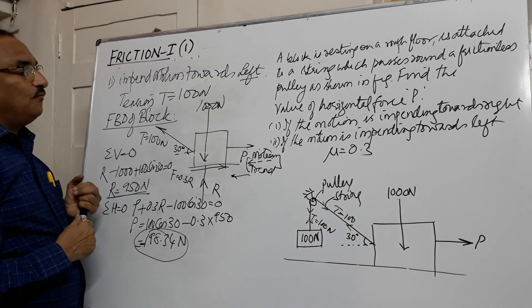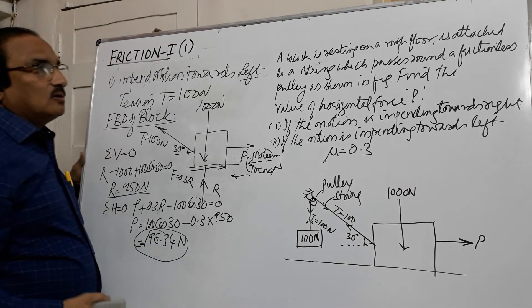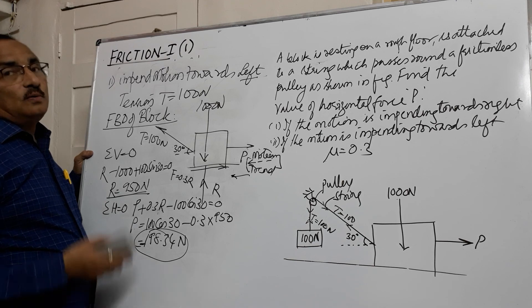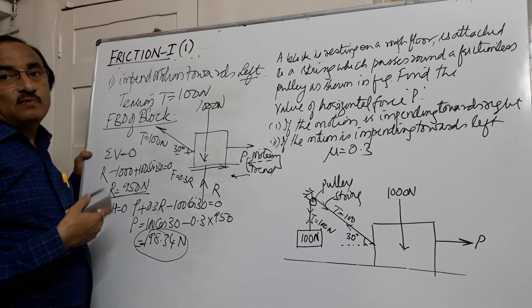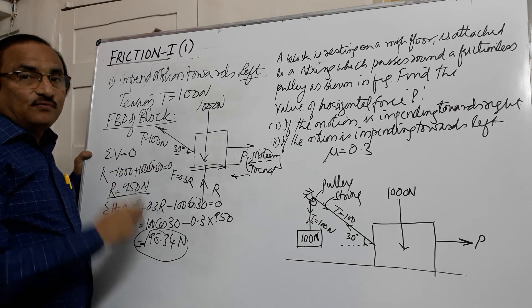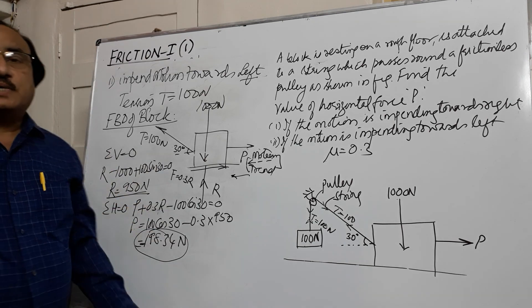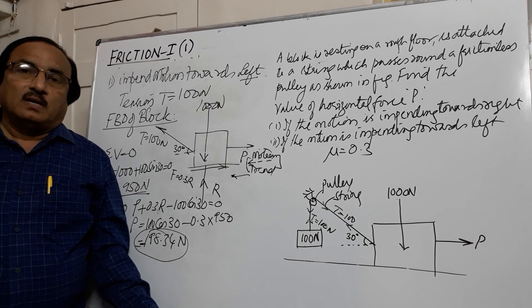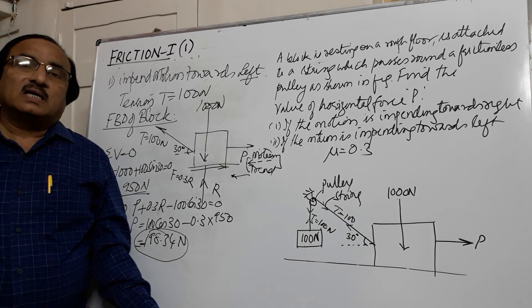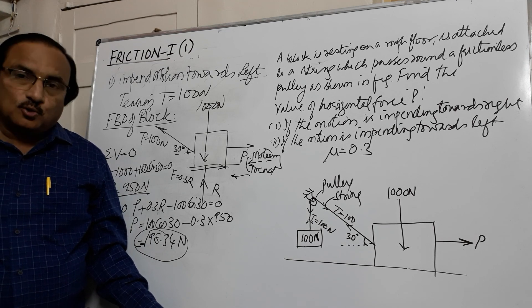These are the types of problems in friction. Motion trend is important — motion trend and force of friction always oppose each other. Please subscribe the channel for more videos, press the bell icon for notifications, and in the comment section you can ask any questions. Thank you.